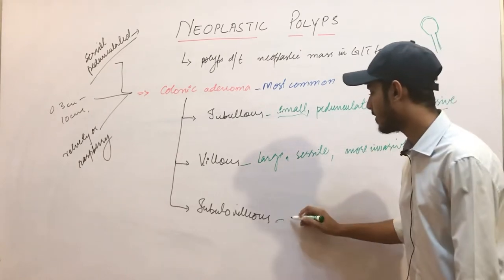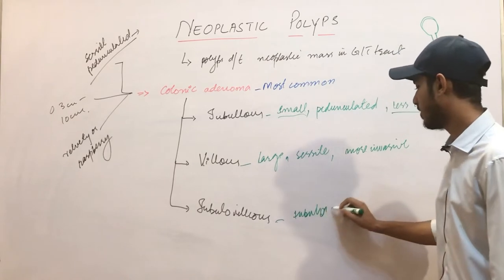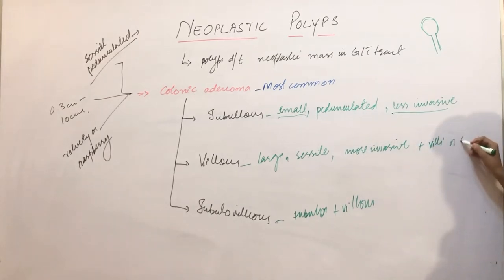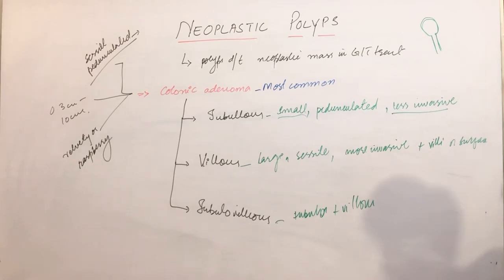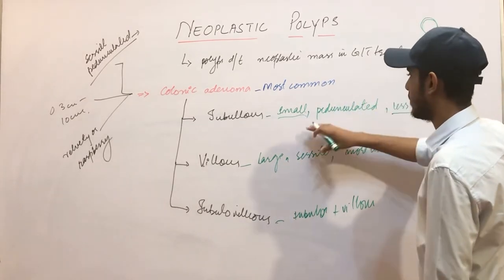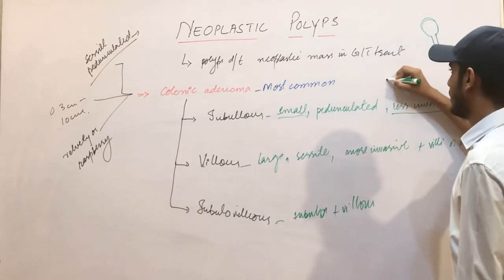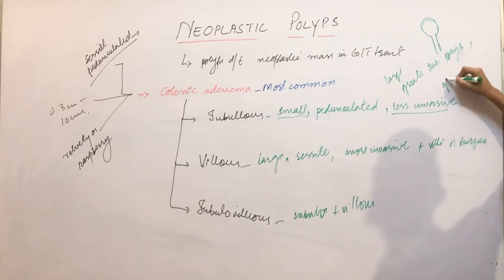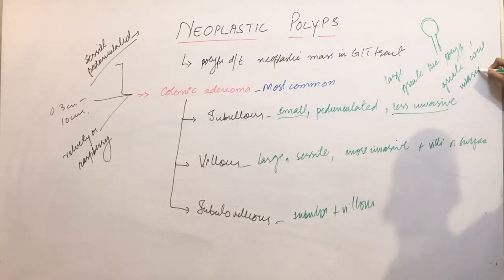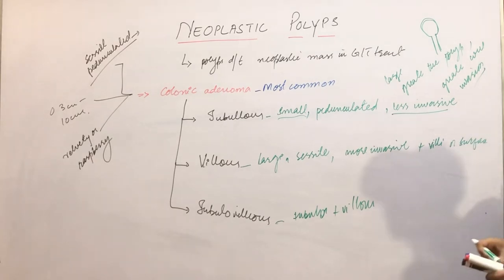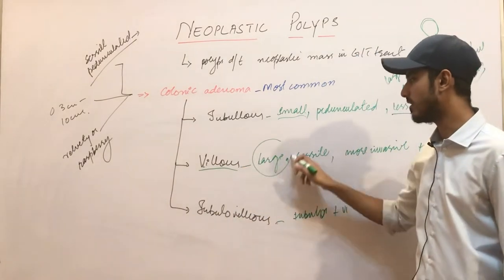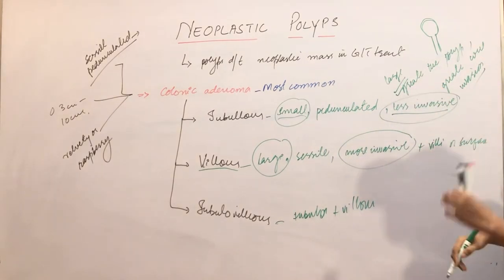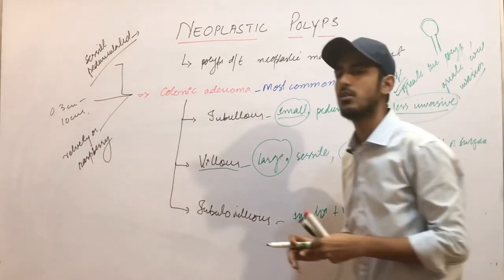There is a rule: the greater the polyp size, the greater the invasion chances. So malignancy chances are more in the villous adenoma because it is large in size, making it more invasive. Tubular adenomas are small in size, so they are less invasive. According to this statement: the greater the polyp, the greater will be the invasion property.